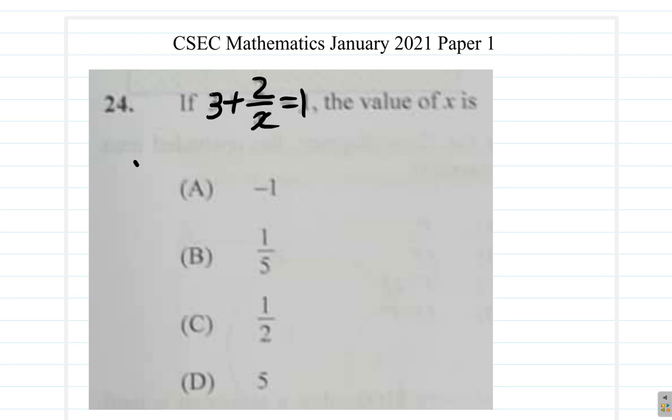One way you could work this out is just straightforward algebra. We say 3 plus 2 over x equals 1. If you multiply both sides by x, you're going to get 3x plus 2. The x will cancel, equals 1 times x.